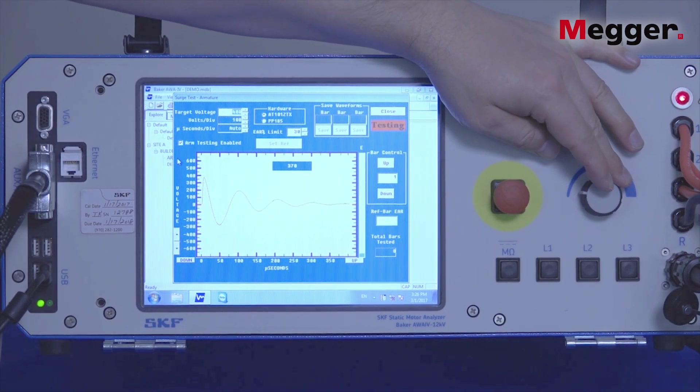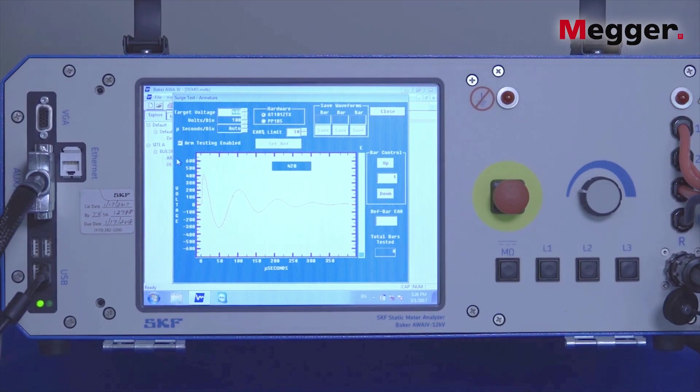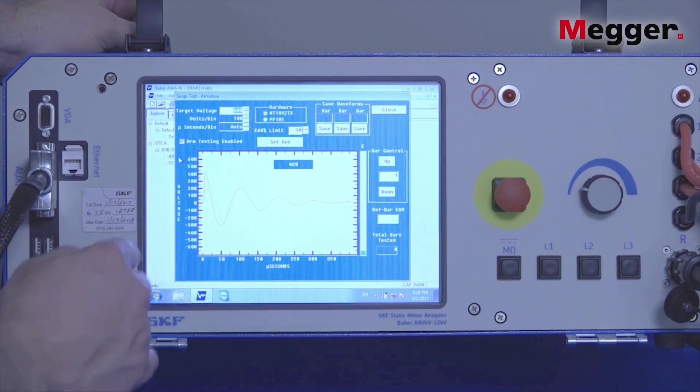Once the test voltage is achieved, you can stop ramping and release the test button, ensuring you have a stable wave.